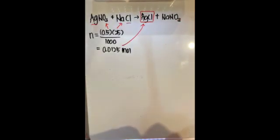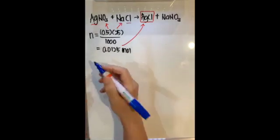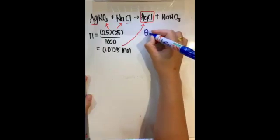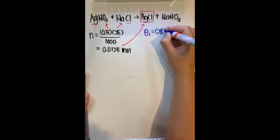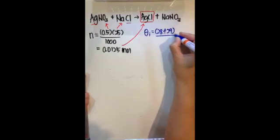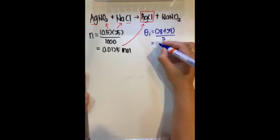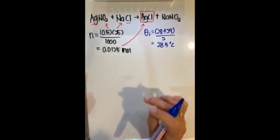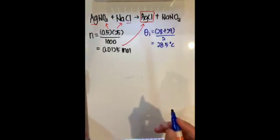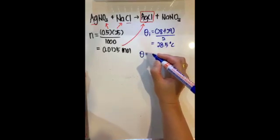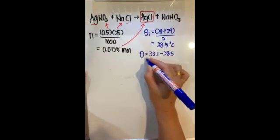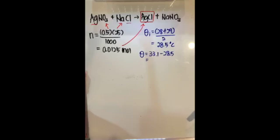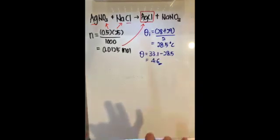Step two: find the temperature change. First, we need the average initial temperature. We have 28°C from the silver nitrate solution and 29°C from the sodium chloride solution, giving an average initial temperature of 28.5°C. The temperature change is the final temperature (33.1°C) minus the average initial temperature, giving ΔT = 4.6°C.